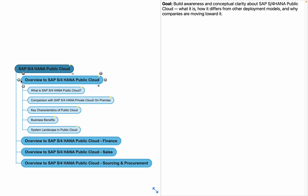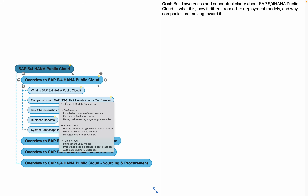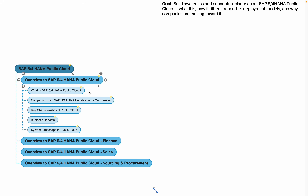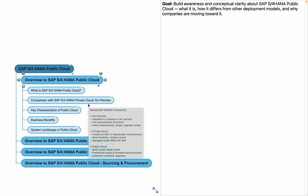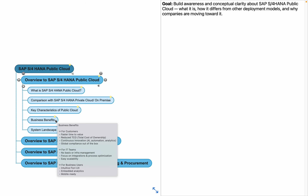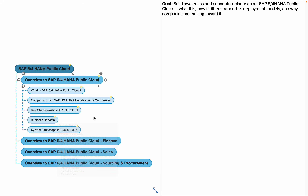In this session we will understand the following topics: first, what is SAP S4HANA public cloud; then we will compare it with SAP S4HANA private cloud or on-premise systems; we will also understand some key terminologies used in public cloud; what are the business benefits; and finally the system landscape of the public cloud system.